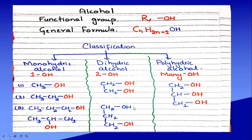Now let's move to our first topic: alcohol. The alcohol functional group is OH. OH is attached to any aliphatic hydrocarbon, so this is known as alcohol. The general formula is CₙH₂ₙ₊₁OH. OH is the functional group of alcohol.